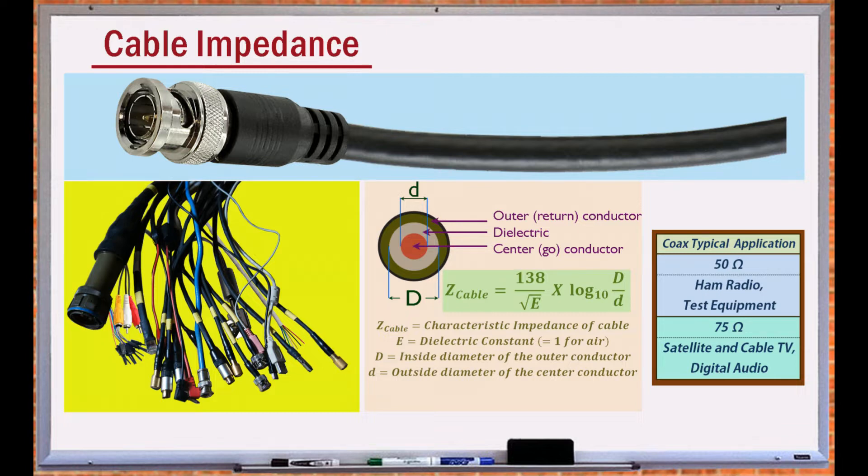For example, a 50 ohm coax is used in low-loss applications, and a 75 ohm coax for maximizing the power to the load.